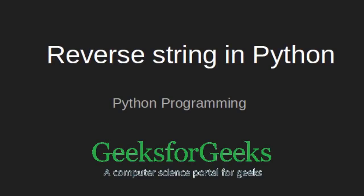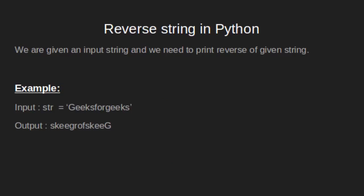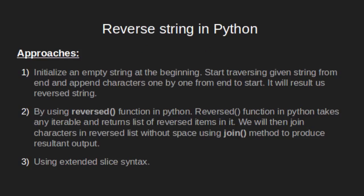Hi, welcome to GeeksforGeeks. In today's tutorial we will talk about a problem: how to reverse a string in Python. We are given an input string and we need to print its reverse order. For example, we have the input string 'geeksforgeeks' and its reverse output which we need to print. We will look at how we can solve this problem in Python with three different approaches.